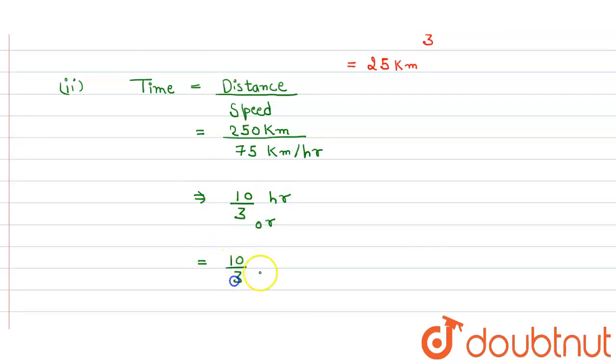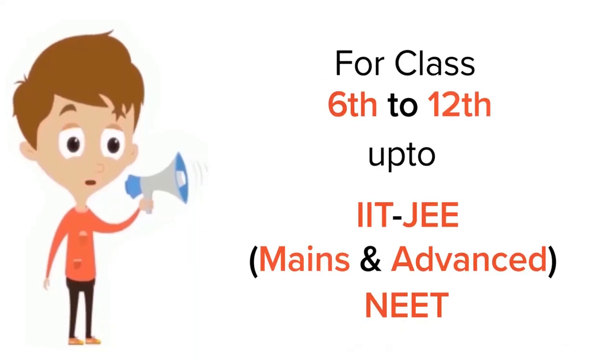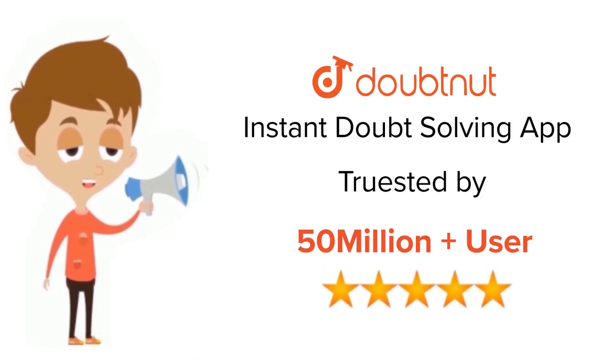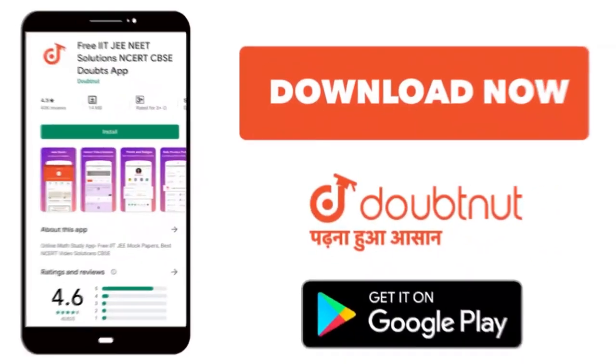by multiplying by 60, so here we get 200 minute. So this is our answer. For class 6 to 12, IIT-JEE and NEET level, trusted by more than 5 crore students, download Doubtnet app today.